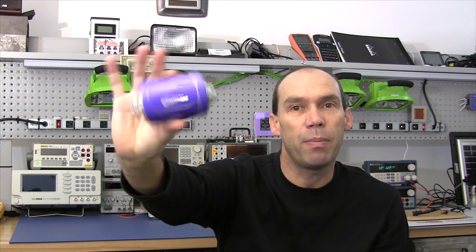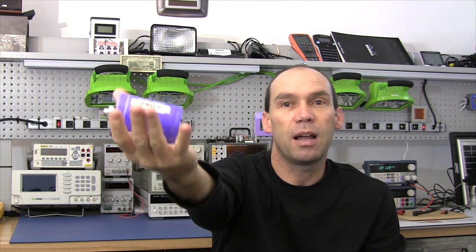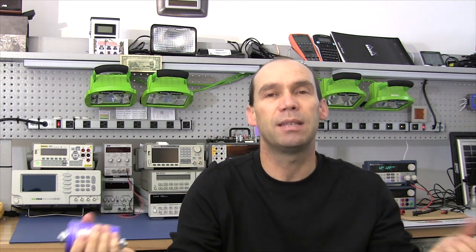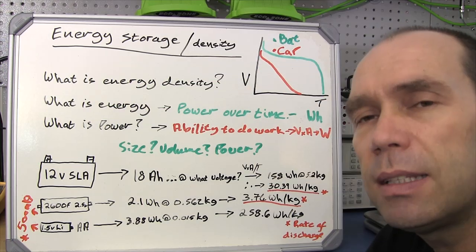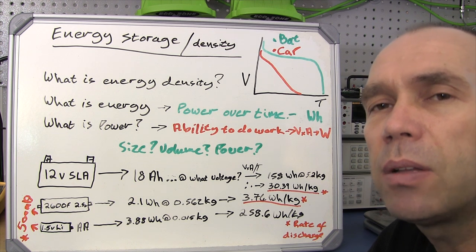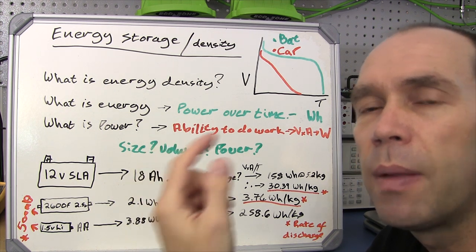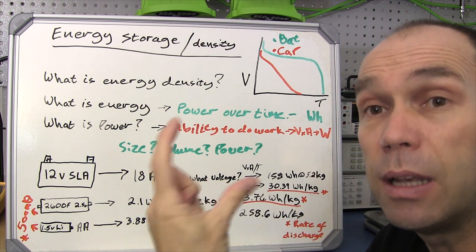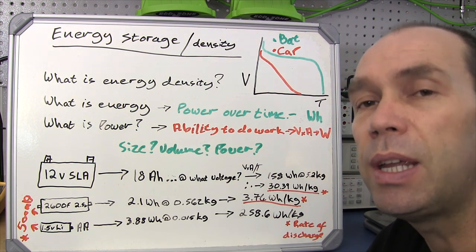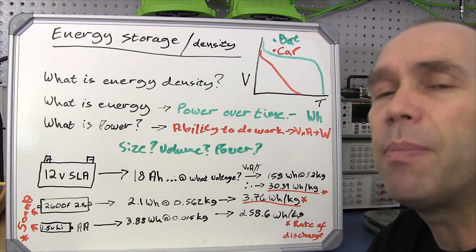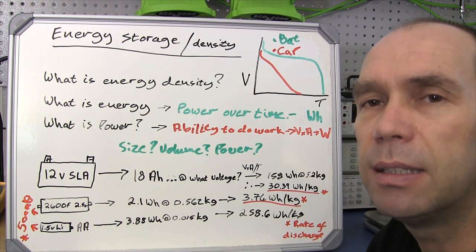Once you have that energy density, you can make direct comparisons with something like a supercapacitor or lead acid battery. Let's have a look at some quick theory before we go to a practical example of how we can measure and test for energy density. I'll also show you a certain electronic DC load I use to measure the capacity of a battery.